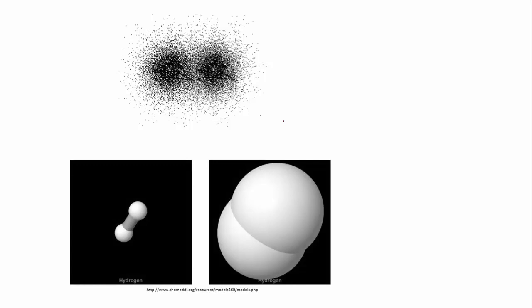There are a number of ways to represent a covalent bond. These two pictures from the Model 360 website show the hydrogen molecule in a ball-and-stick representation on the left, and a space-filling representation on the right, which is an approximation of what the electron cloud of the complete molecule looks like.